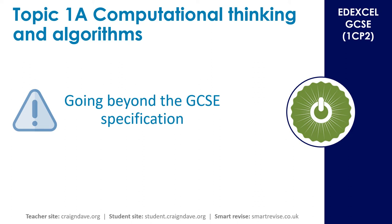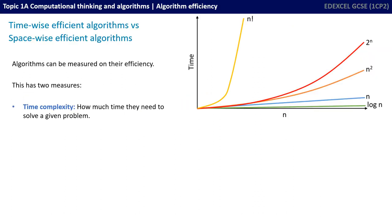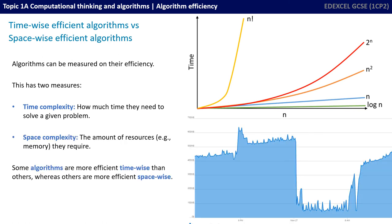That is certainly enough for the GCSE specification to appreciate that although many algorithms can perform the same purpose, they are not all equally efficient. However, if you find the topic of algorithms interesting, we're going to go over some content covered at A-level. When we talk about algorithm efficiency beyond GCSE, we can measure efficiency in two ways: time complexity — how much time an algorithm needs to solve a problem — and space complexity — the amount of resources, such as memory, the algorithm requires to complete.